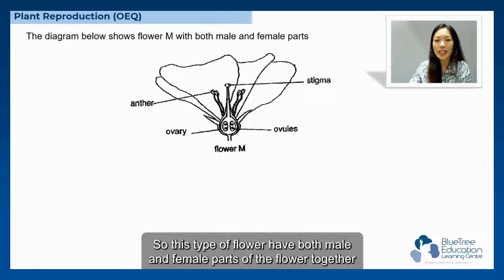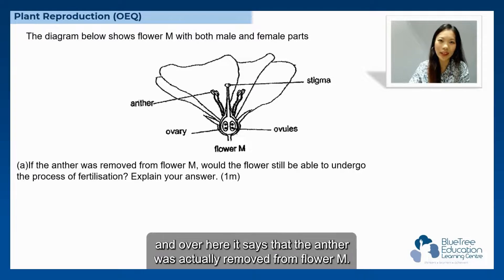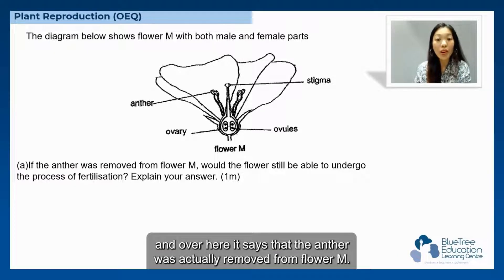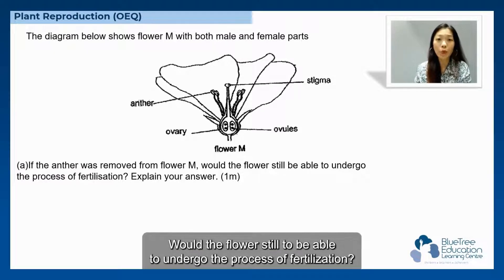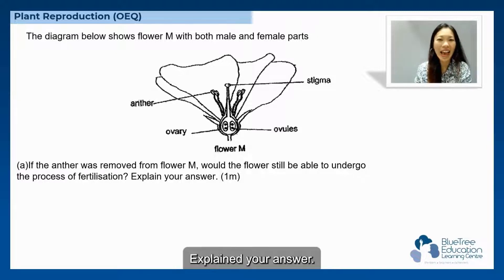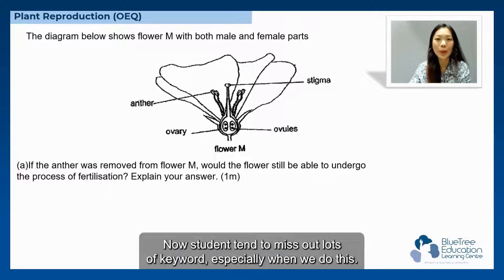This flower has both male and female parts together. The question asks: if the anther was actually removed from the flower, would the flower still be able to undergo the process of fertilization? Explain your answer.